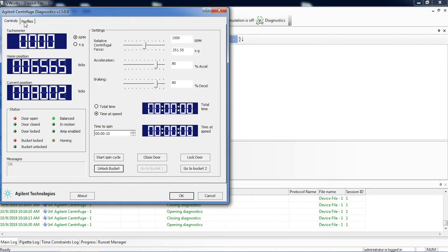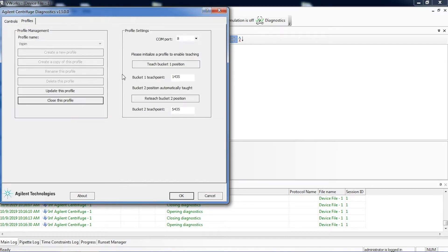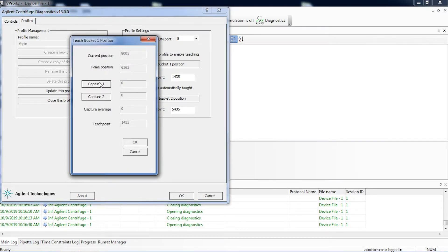Once you've manually aligned the bucket, go back to profile, click on teach bucket position 1, and then capture 1 and capture 2.